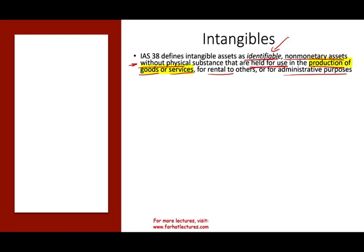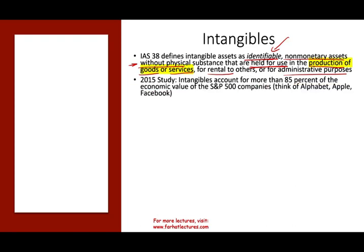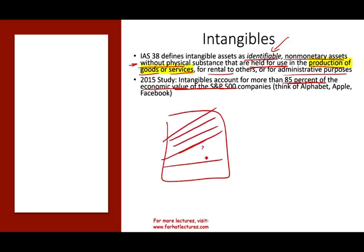Intangibles are a very important part of our economy, at least in the U.S. There was a study made in 2015 that found intangibles account for more than 85% of the economic value of S&P companies. So on average, 85% of a company's economic value is coming from its intangibles, which represent a tremendous value. That's why it's very important that we understand how intangibles work.